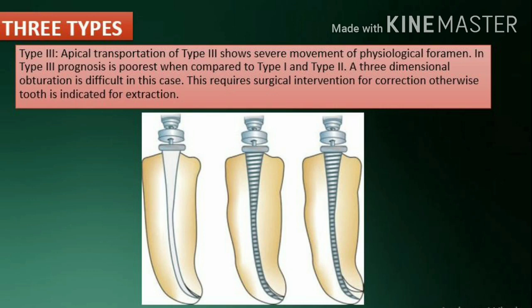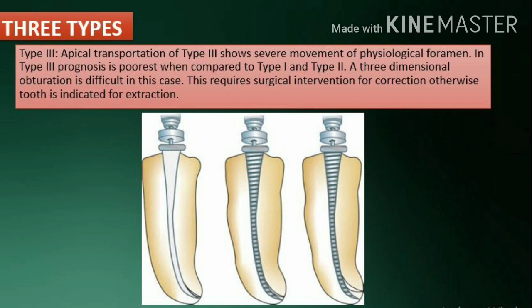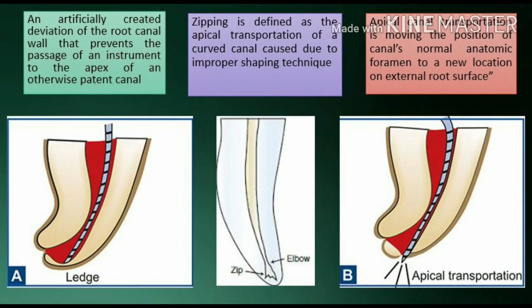Type 3: Apical transportation of type 3 shows severe movement of the physiological foramen. The prognosis is poorest when compared to type 1 and type 2. A three-dimensional obturation is difficult in this case. This requires surgical intervention for correction; otherwise, the tooth is indicated for extraction.